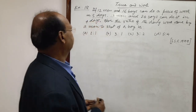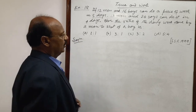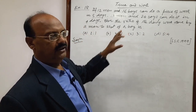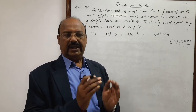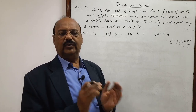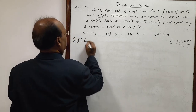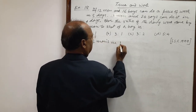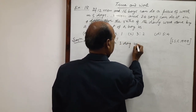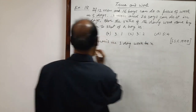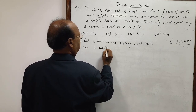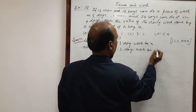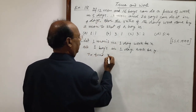Let us see the solution. What we have to find out is the ratio of the daily work done by a man to that of a boy — meaning the ratio of work done by one man in one day to work done by one boy in one day. So let us suppose one man's one day work is X and one boy's one day work is Y. So here we have to find X is to Y.